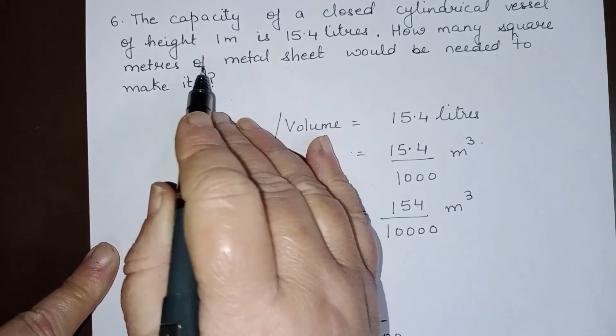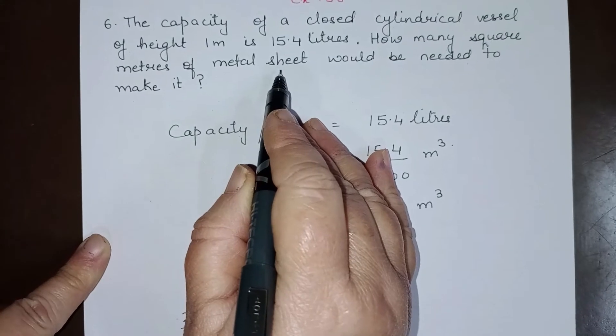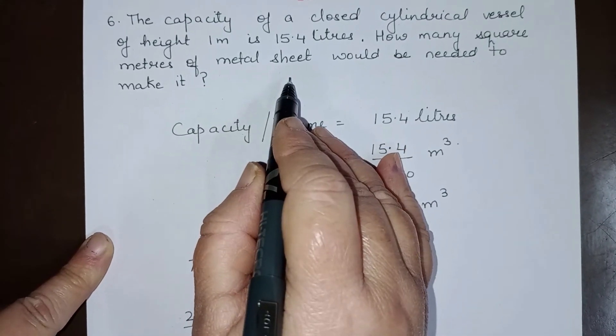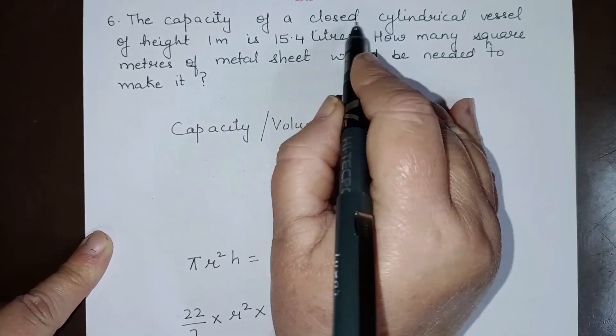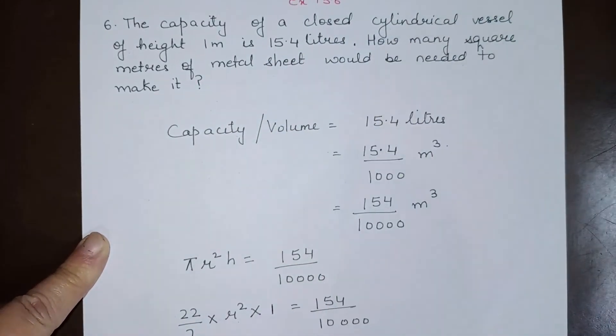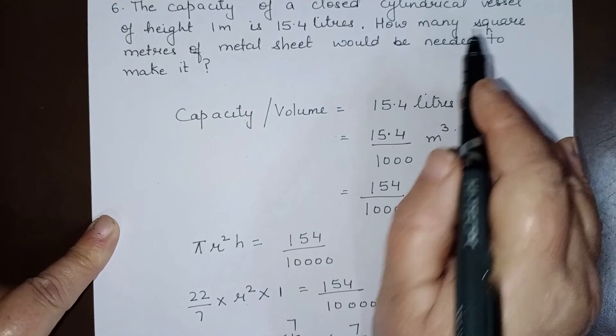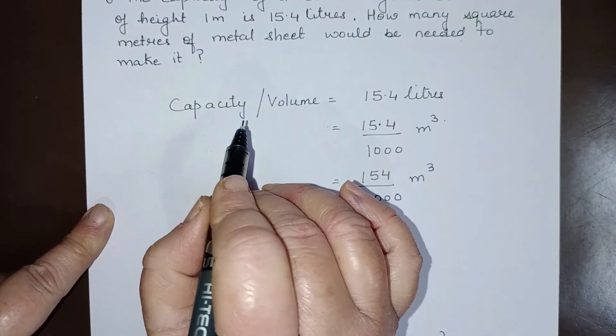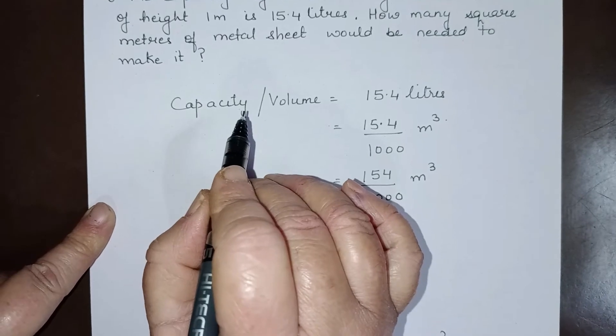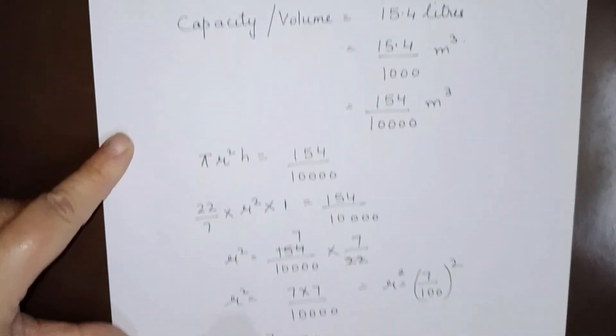Now the question is how many square meters of metal sheet? Square meters of metal sheet means we have to find the total surface area because this is a closed cylindrical tank. To find the metal sheet needed, we have to find the total surface area of this vessel.